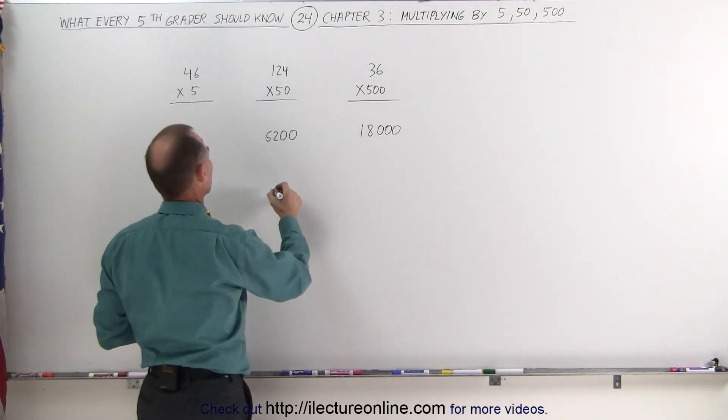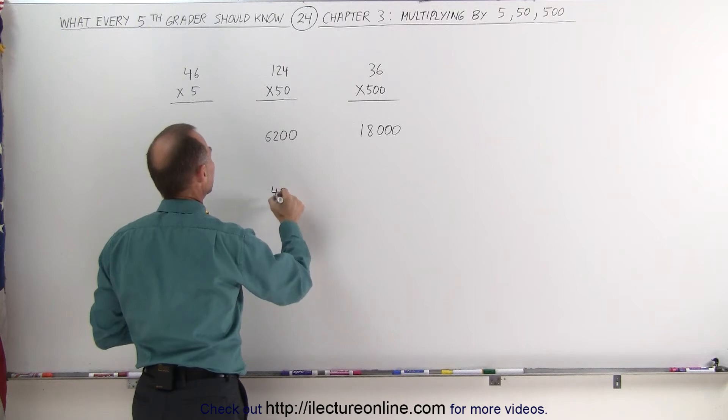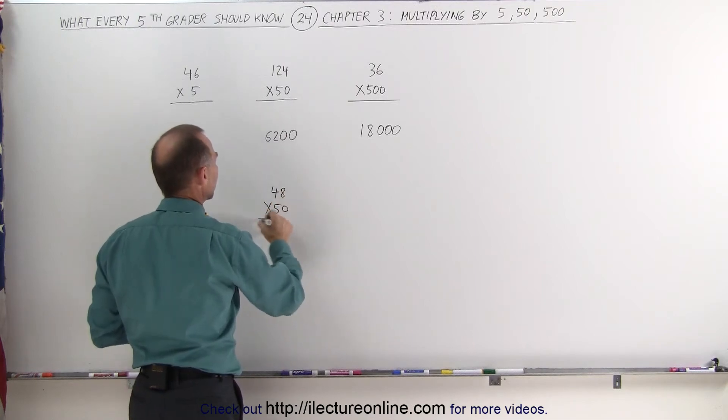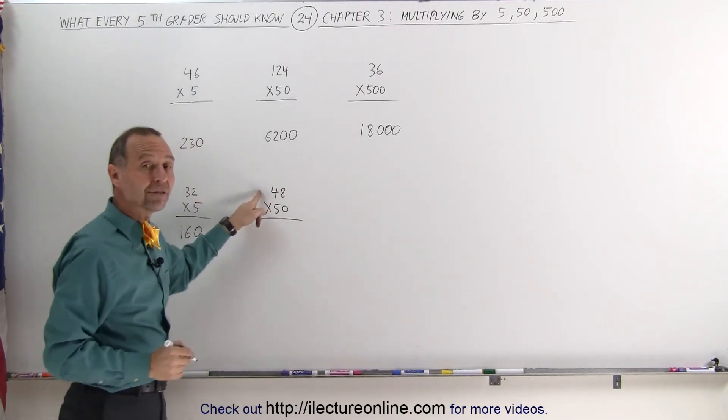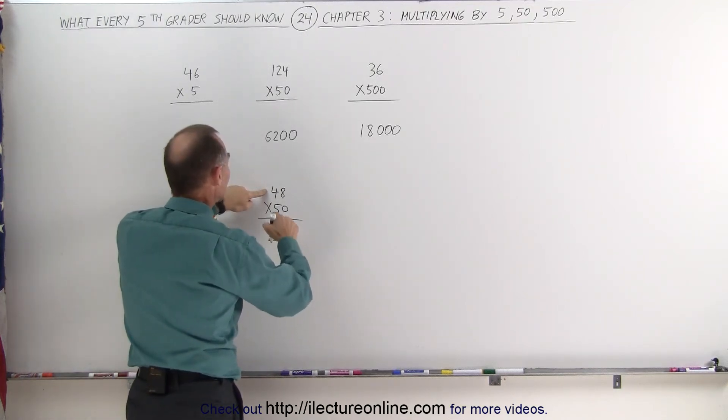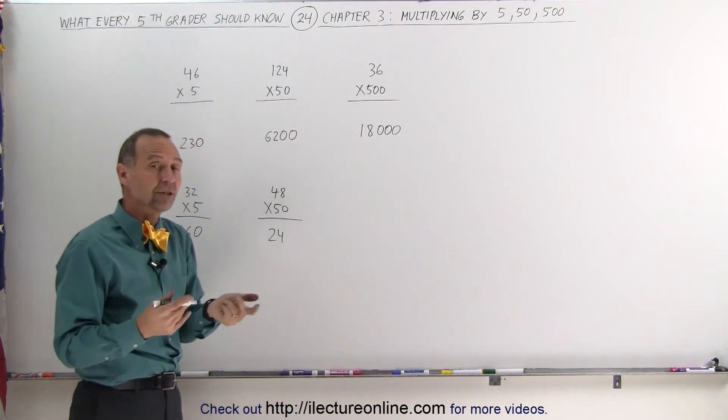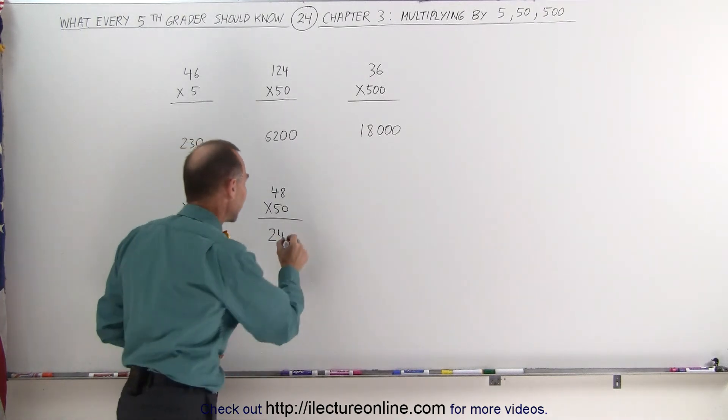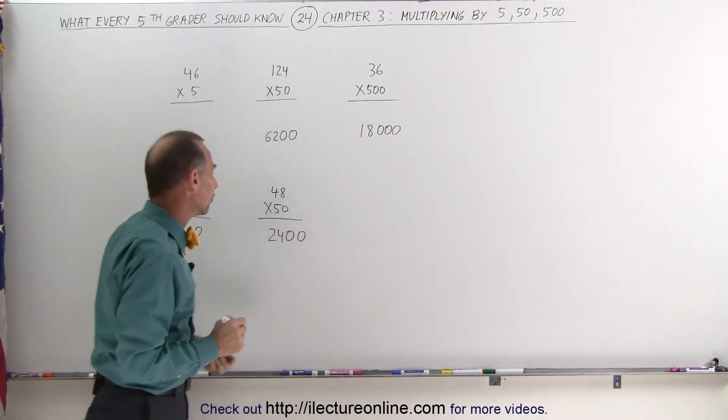How about 48 times 50? First I divide 48 by 2. Half of 48 is 24. Then I multiply times twice what 50 is, which is 100. Multiplying times 100 is like adding two zeros and you get 2,400.